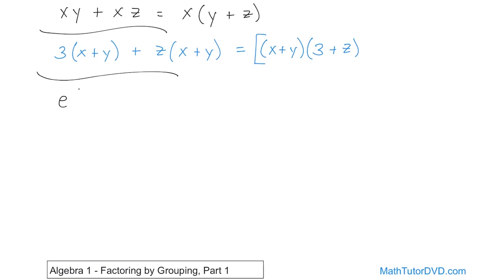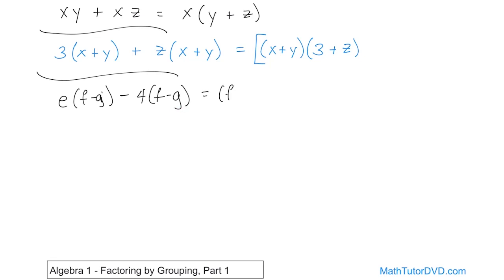As you get more practice you'll see the pattern. Let's say we have e times the quantity f minus g, minus four times the quantity f minus g. We look at both larger terms and ask what's common. We have e and four — not the same — but we have f minus g and f minus g, which are grouped terms in parentheses and exactly identical. So I can pull out f minus g, open another parentheses, and when I pull it out from the first term I have e left, and from the second term I have four left, but there's a minus sign, so it'll be e minus four.